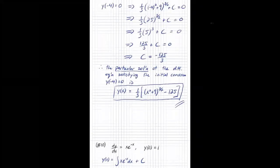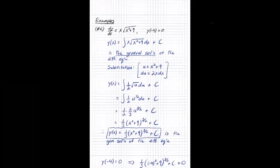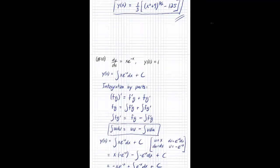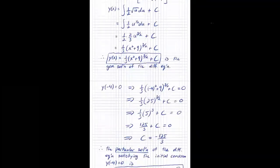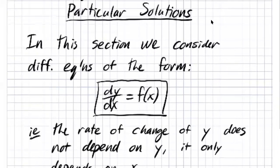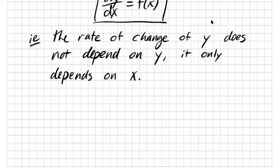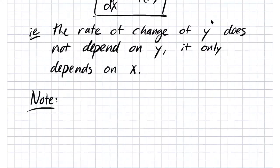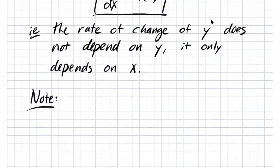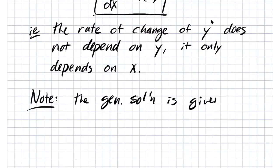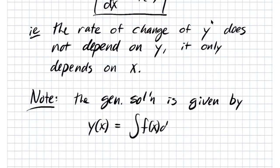There are a couple of examples we just did: one required u-substitution and one required integration by parts. For this type of differential equation — where dy/dx equals f of x — the general solution is given by y of x equals the integral of f of x dx plus C. The particular solution requires an initial condition to determine C.